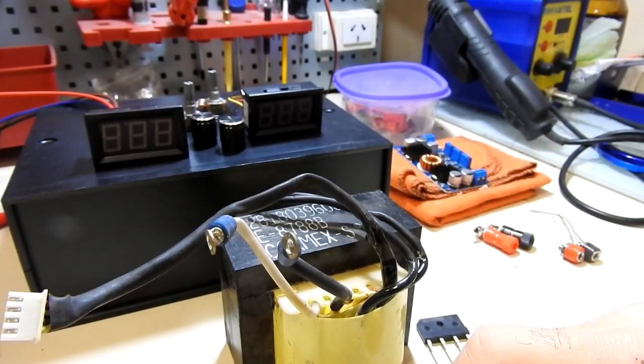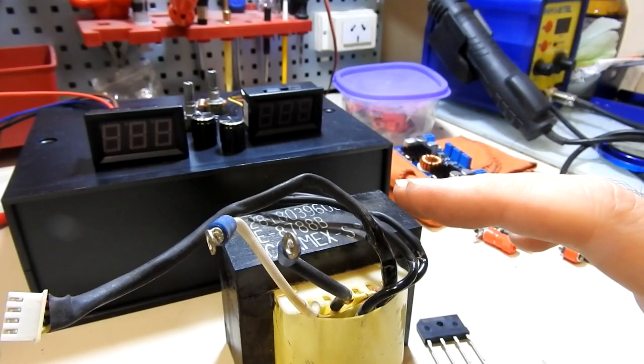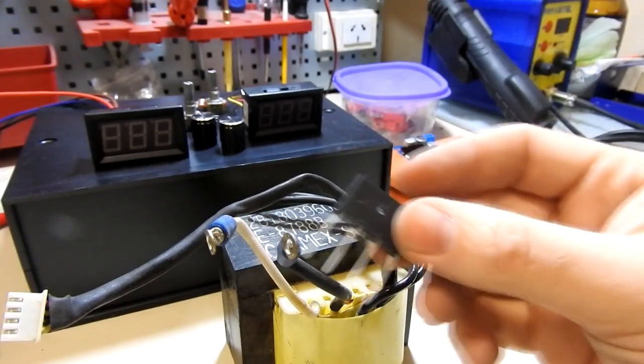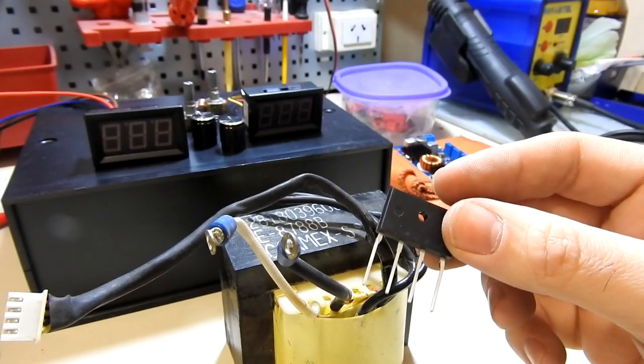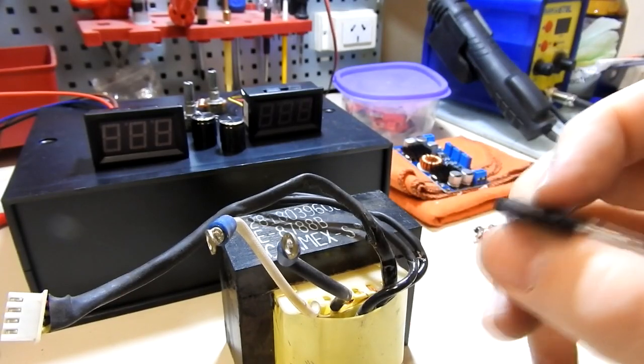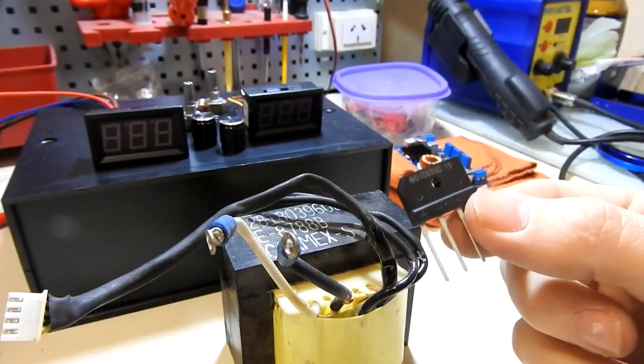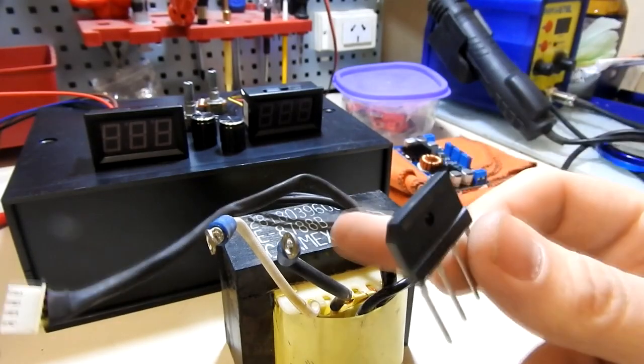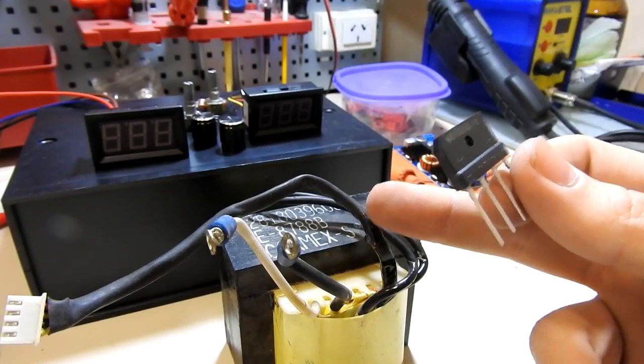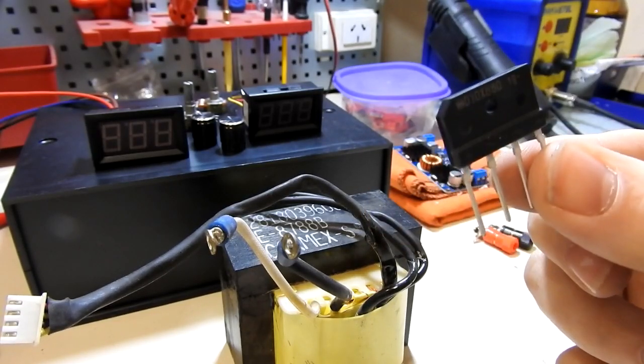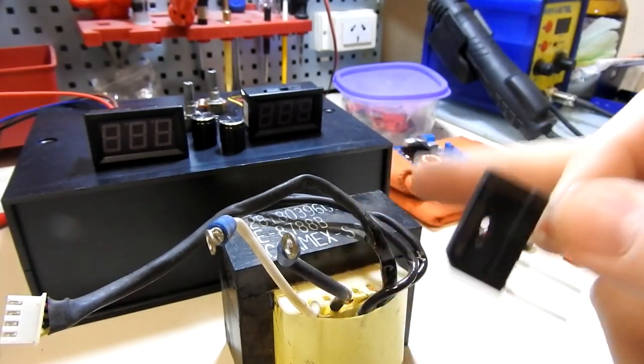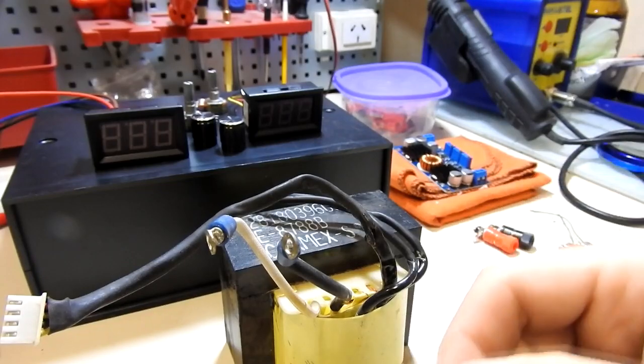Lo que nos haría falta también es algunos capacitores electrolíticos para poner a la salida de esto. Tal vez lo montemos todo en el aire, tal vez hagamos una placa. No sé qué vamos a hacer, no sé cómo lo vamos a poner. Eso lo voy hirviendo al vuelo.